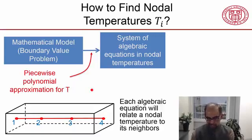Each equation will relate a nodal temperature to its neighbors. It's going to be a linear equation. So for instance, if I write the equation at this node, it will relate the temperature T2 to T1 and T3.